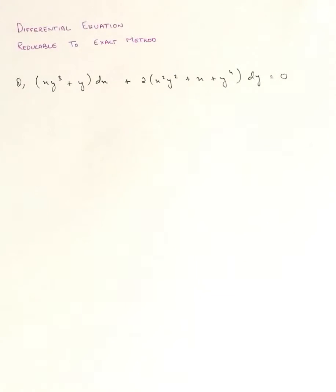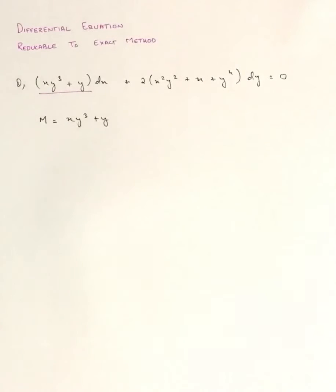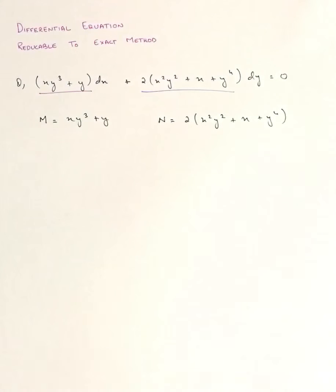Like in the exact method, we have two different terms: one term with dx and another with dy. Let's call the term with dx as M, so M = xy³ + y. Let's call the term with dy as N, so N = 2(x²y² + x + y⁴).